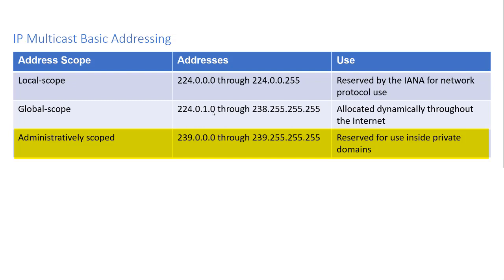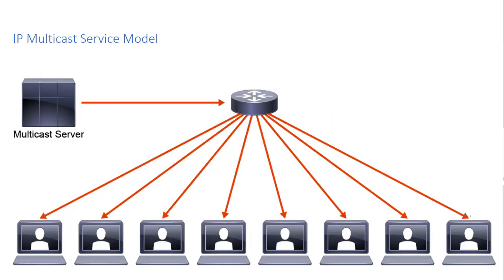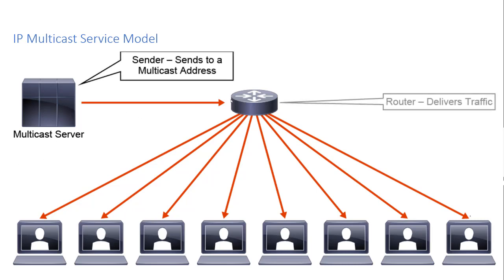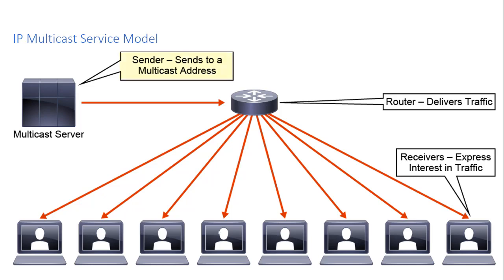Our IP multicast service model has three components: a sender, routers, and receivers. The sender sends traffic out to the multicast address. The routers see that multicast traffic and copy it to any segment on the network that needs it. Receivers register with the routers to express interest in traffic — they send a message to that multicast address saying they want it, so the router knows where the receivers are in the network.